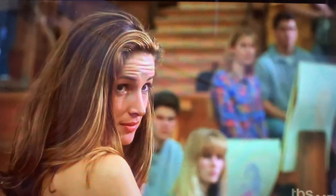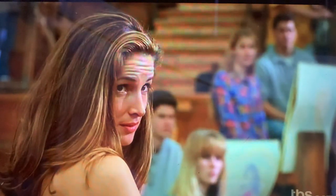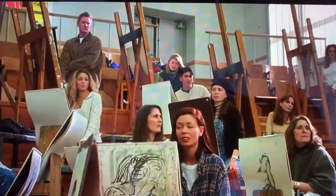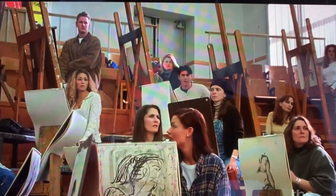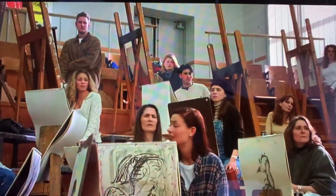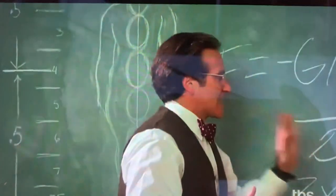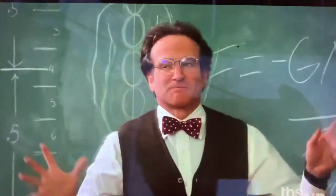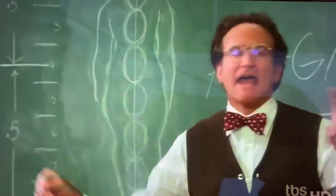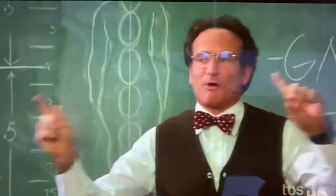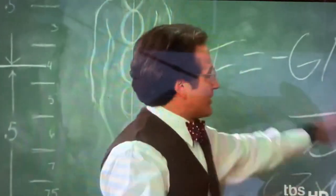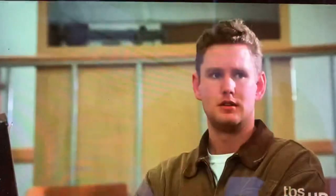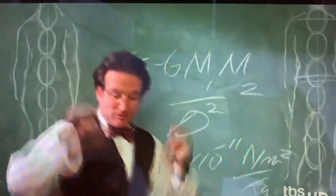To review: this G is like the c in E=mc² — it's constant in the universe. The law states that the force of attraction between two bodies is in direct proportion to the product of their masses, and in inverse proportion to the square of the distance between them.